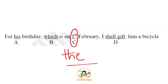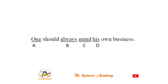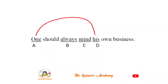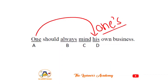Sentence: 'One should always mind his own business.' When the subject is 'one,' its possessive form must also be 'one's,' not 'his.' The corrected sentence is: 'One should always mind one's own business.' Using 'his' is incorrect here because 'one' requires 'one's' as its possessive pronoun.